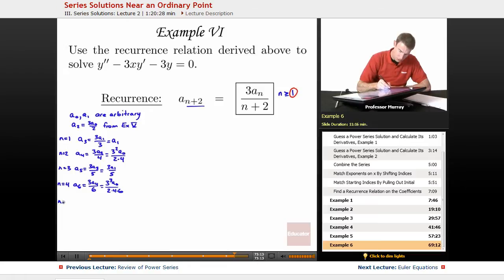N equals 5 is going to give me A7 is 3A5 over 7, which in terms of A1 is 3 squared times A1 over 3 times 5 times 7.